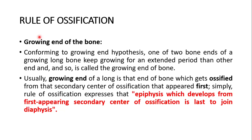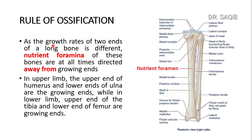Simply, the rule of ossification expresses that the epiphysis which develops from the first appearing secondary center of ossification is the last to join with the diaphysis. As the growth rates of the two ends of long bones are different, nutrient foramina of these bones are at all times directed away from the growing end.